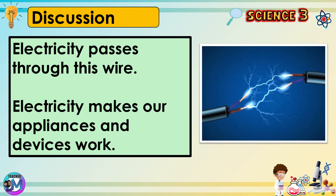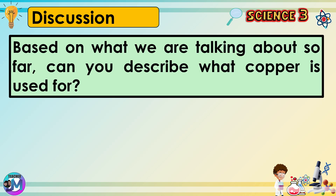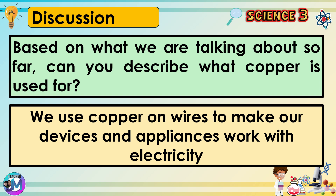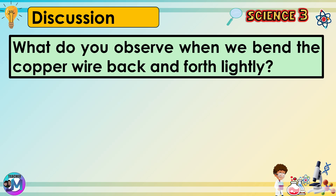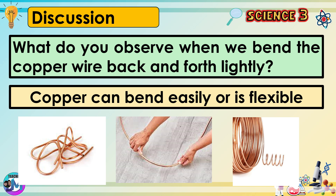Electricity passes through this wire. Electricity makes our appliances and devices work. Based on what we are talking about so far, can you describe what copper is used for? We use copper on wires to make our devices and appliances work with electricity.